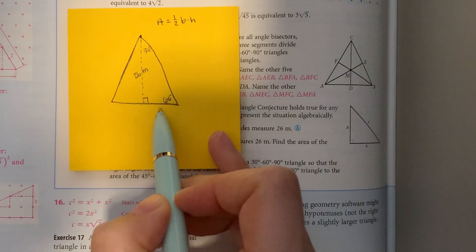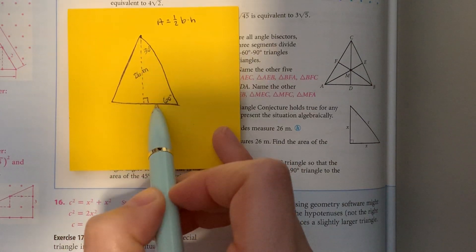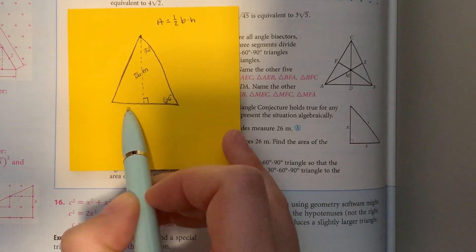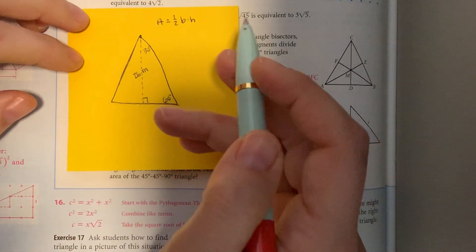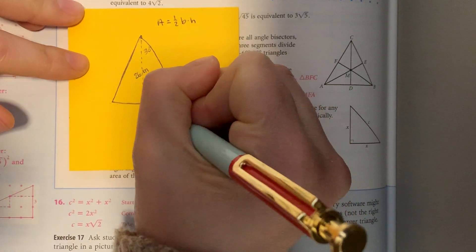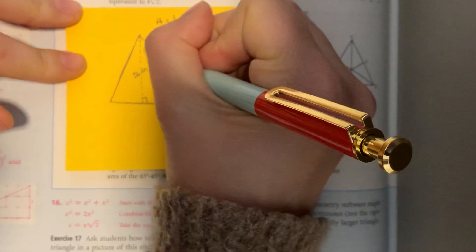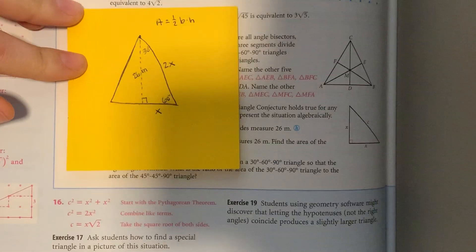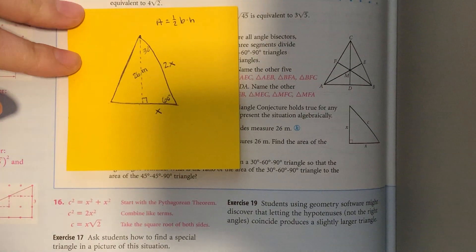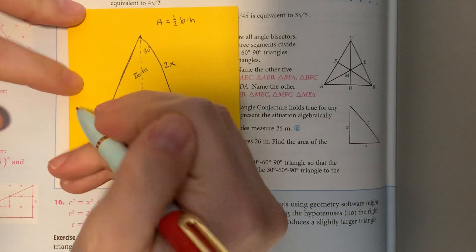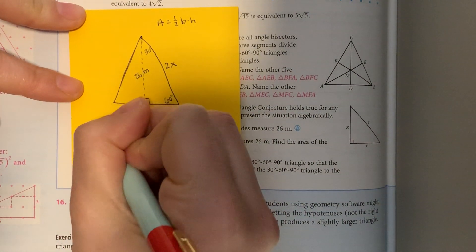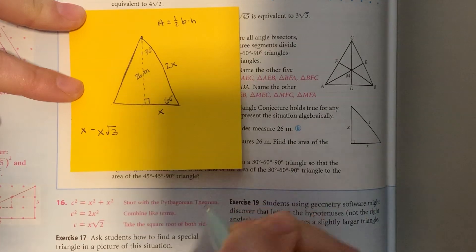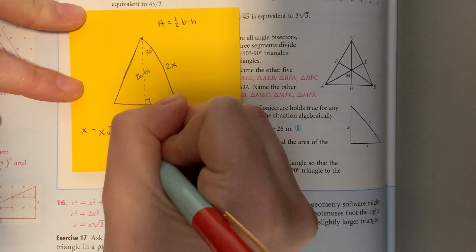We need to find the short side of the 30-60-90 triangle, then multiply by 2 for the whole base. If we consider the short leg to be x, then the hypotenuse is 2x. For a 30-60-90 triangle, the short leg is x, the long leg is x times the square root of 3, and the hypotenuse is 2x.